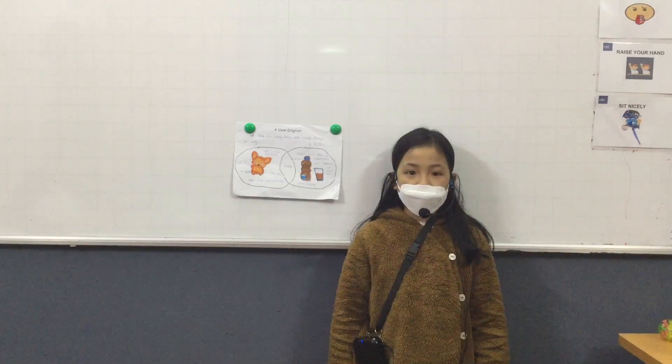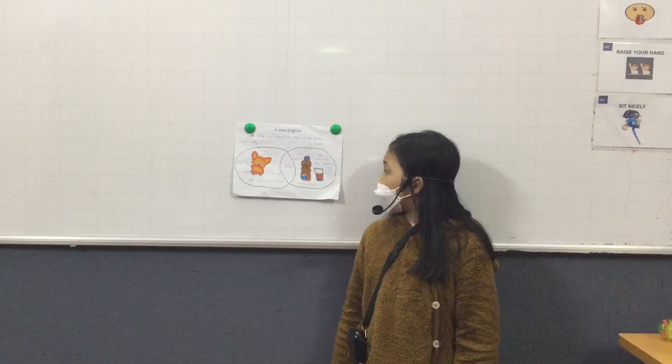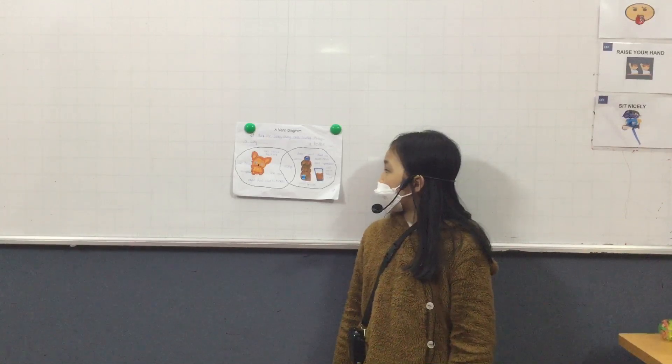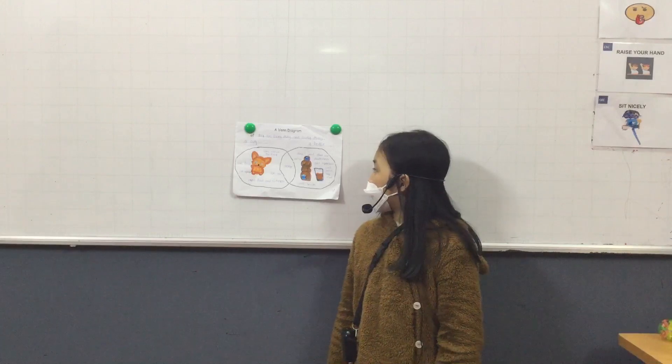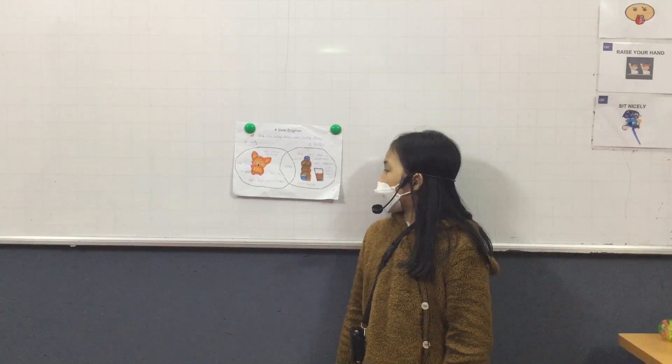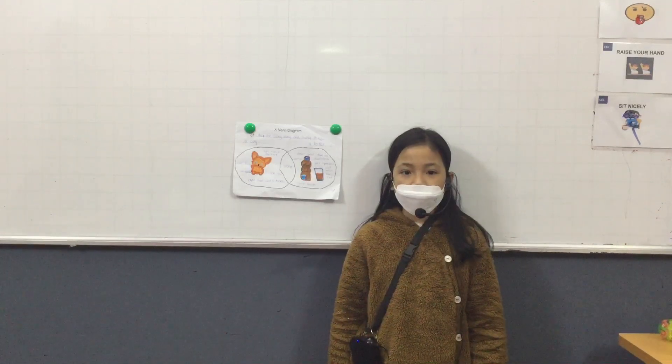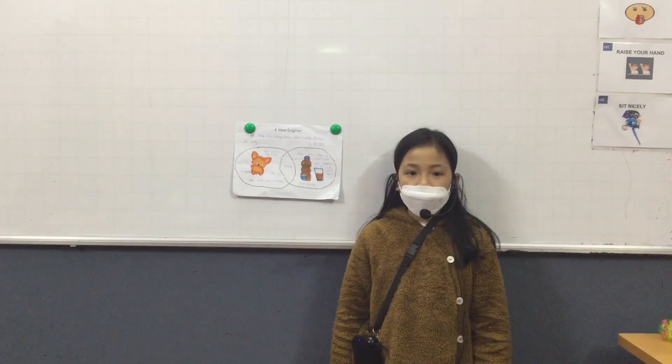The first difference between the dog and the bottle is the dog can breathe but the bottle can't breathe. The dog breathes in oxygen and breathes out CO2.